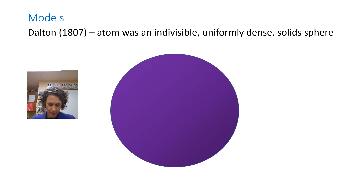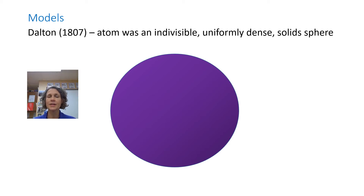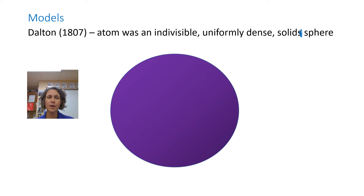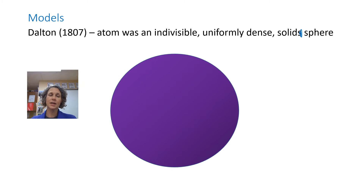Now talking about models — Dalton's model was basically just a solid sphere: indivisible, uniformly dense, and solid. He did not know about any subatomic particles at this point; he just based it on the idea that it's indivisible — you can't get any smaller. Think of it like a BB. This was the beginning model and would obviously be improved upon.